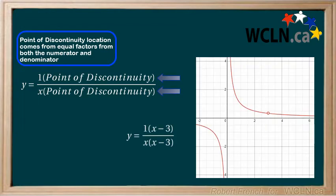Consider the following example. There is a factor of x minus 3 in both the numerator and denominator, and a point of discontinuity included in the graph of the function at x equals 3.